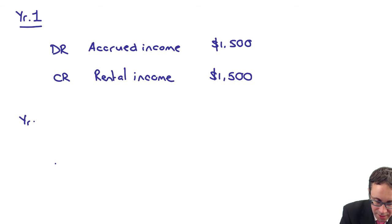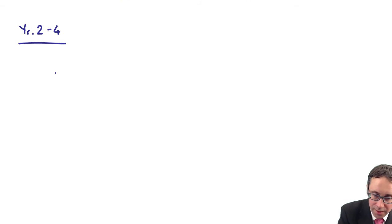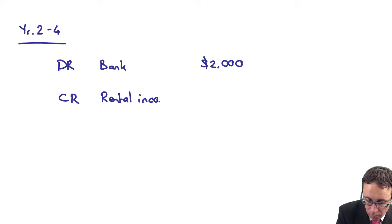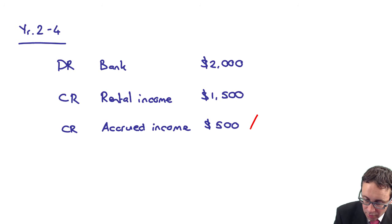In years two to four, what will happen each year is we are going to receive $2,000 from the bank, so debit the bank with $2,000, credit our rental income with $1,500, and then each year we credit our accrued income with $500. That credit will reduce the accrued income.